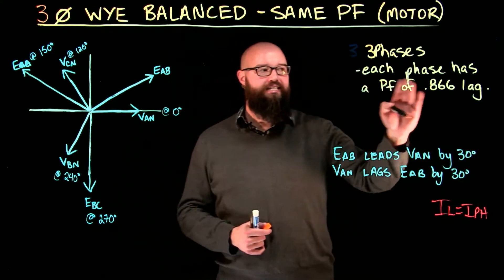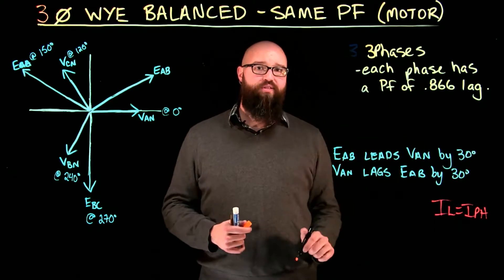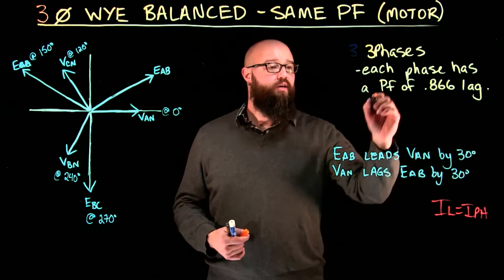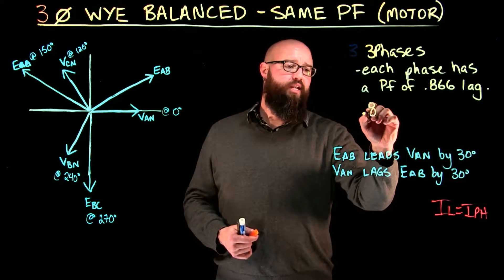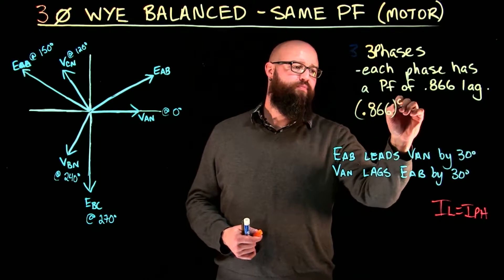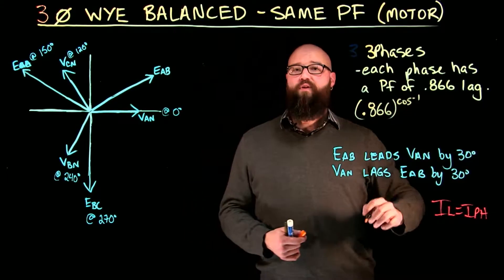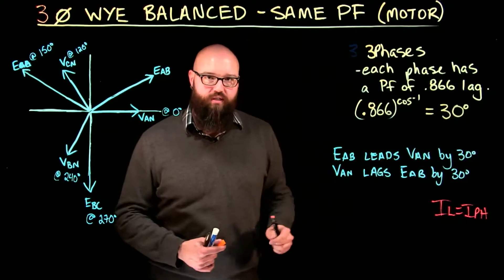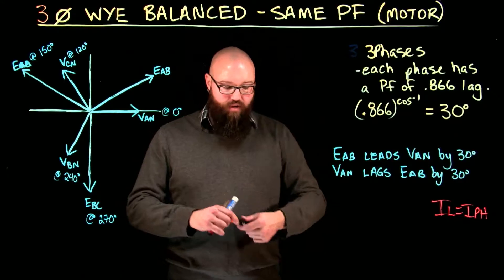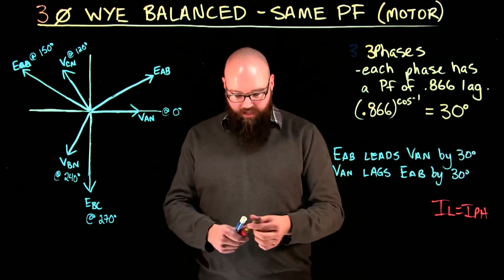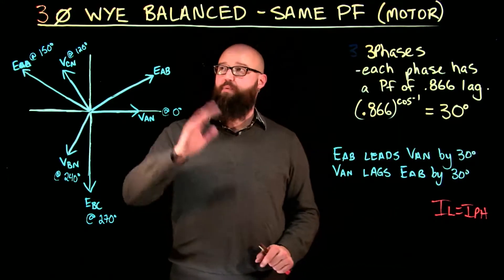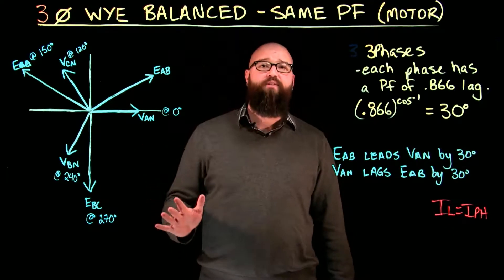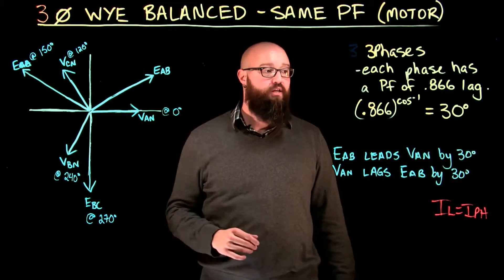For this load, let's talk about 0.866 lag. Now, in order to work with this on my phasor diagram, I need to convert my power factor into my actual angle. So, we're going to arc cos 0.866, which will convert it to my phase angle. Conveniently for us, it's going to work out to 30 degrees. Nice and easy to work with.